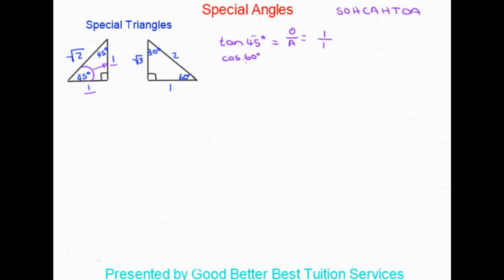The next example is cos 60 degrees. We use the triangle on the right-hand side because of the 60 degrees. Cosine uses adjacent over hypotenuse. The adjacent side is equal to one and the hypotenuse is equal to two, so cos 60 equals one over two.